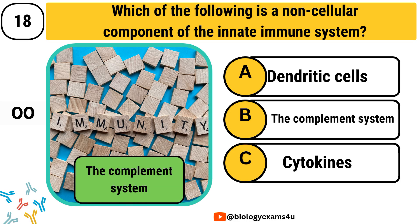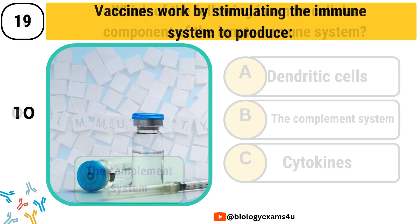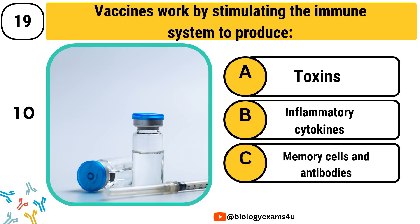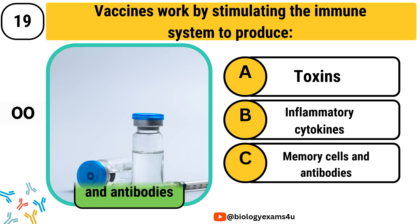Question number 19. Vaccines work by stimulating the immune system to produce: Option A, toxins. Option B, inflammatory cytokines. Option C, memory cells and antibodies. The correct answer is memory cells and antibodies.